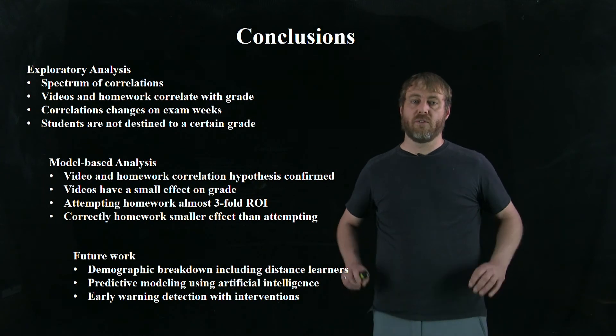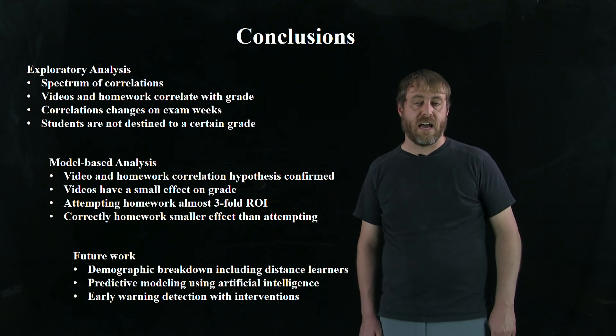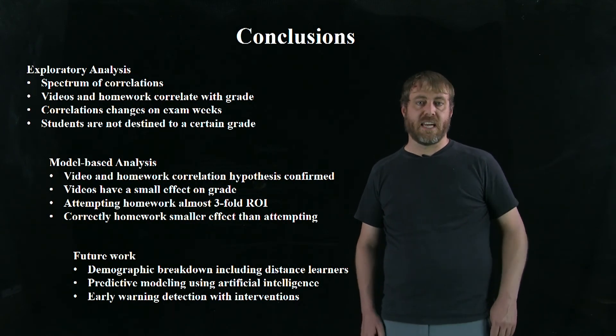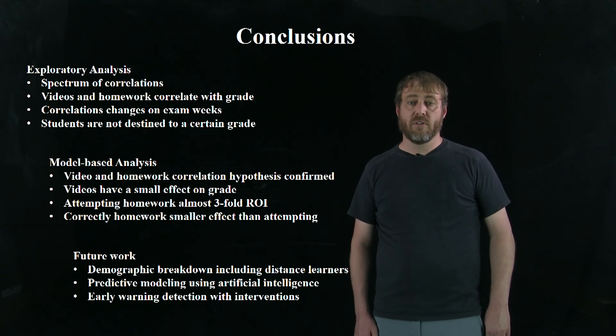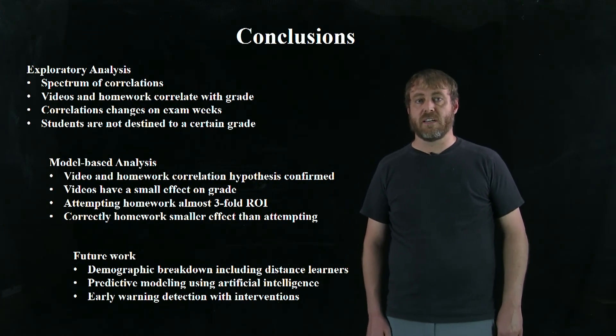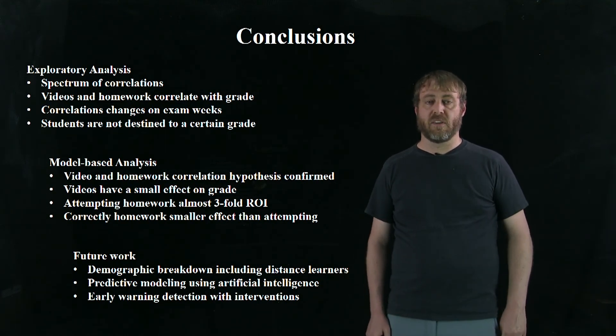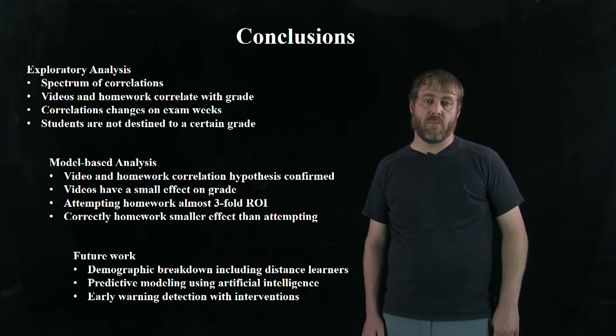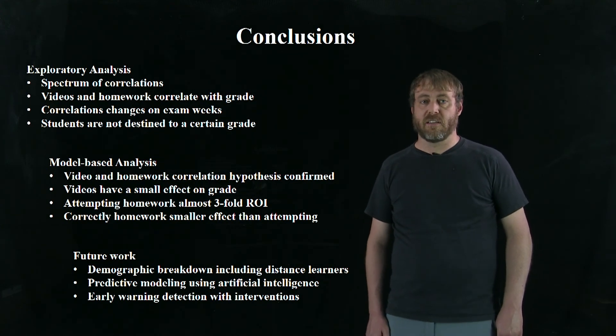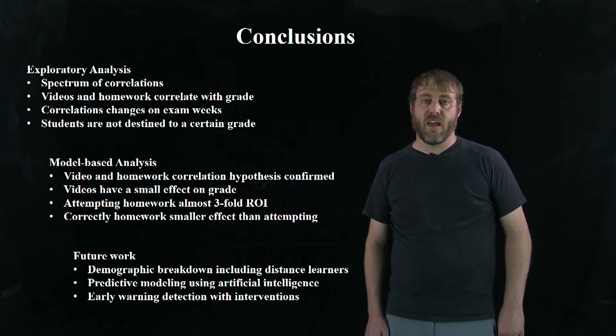Future work. We definitely want to do a demographic breakdown, including we're building an entire distance learning eCampus course that goes live in fall 2019. And we want to see how that cohort of students engages differently than our on-campus students. We want to move into predictive modeling and so we started an artificial intelligence analysis where we can try and group students based on the different types of engagements. And hopefully use that to do early warning sign predictions so that we can create interventions and find students before it's too late and reach out to them. Because ultimately what this work is about is improving student success here at Oregon State and in the wider community.